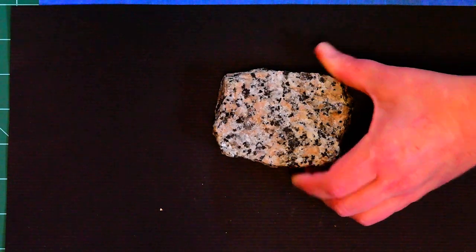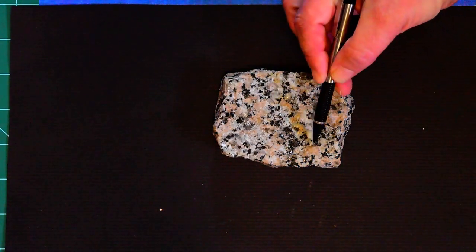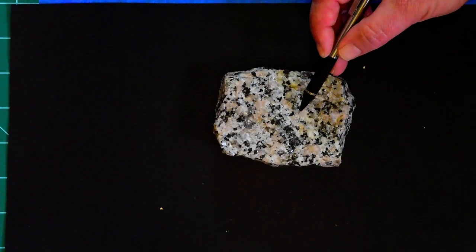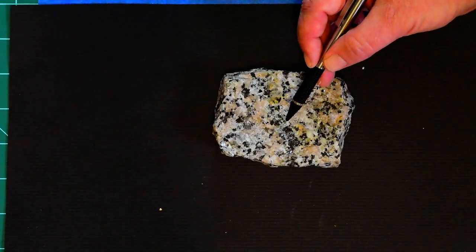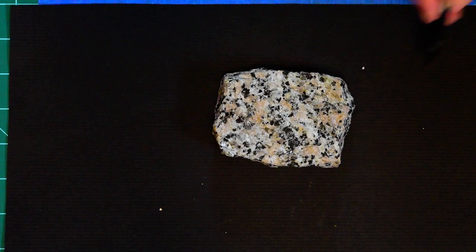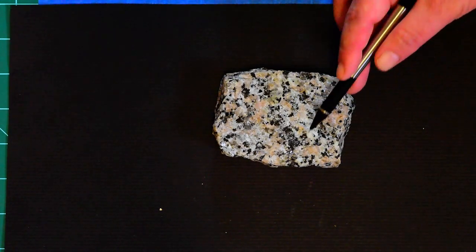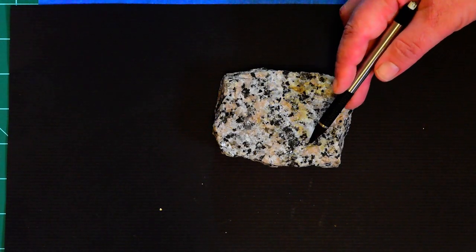This one is also porphyritic. We have these bigger pink feldspar crystals, but they're surrounded by smaller black and white crystals. That's an intrusive porphyritic rock, and we know it's intrusive because the smaller crystals are easy to see.